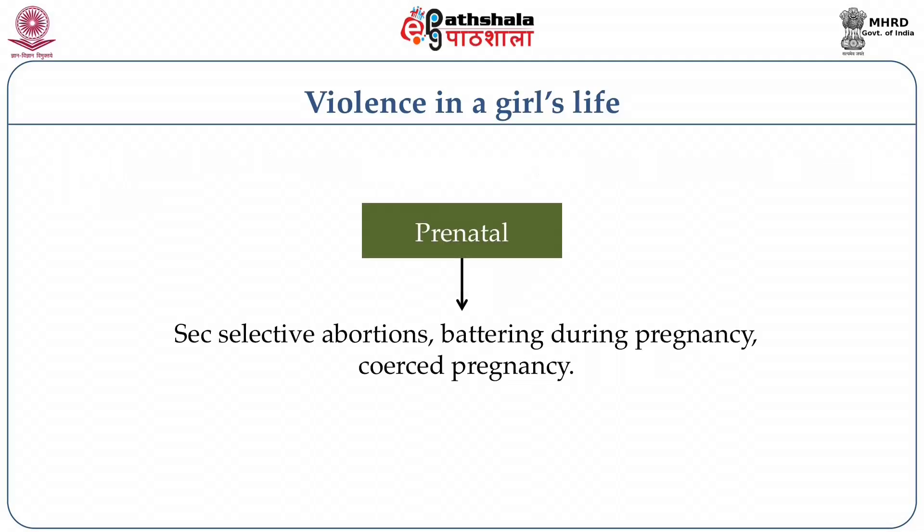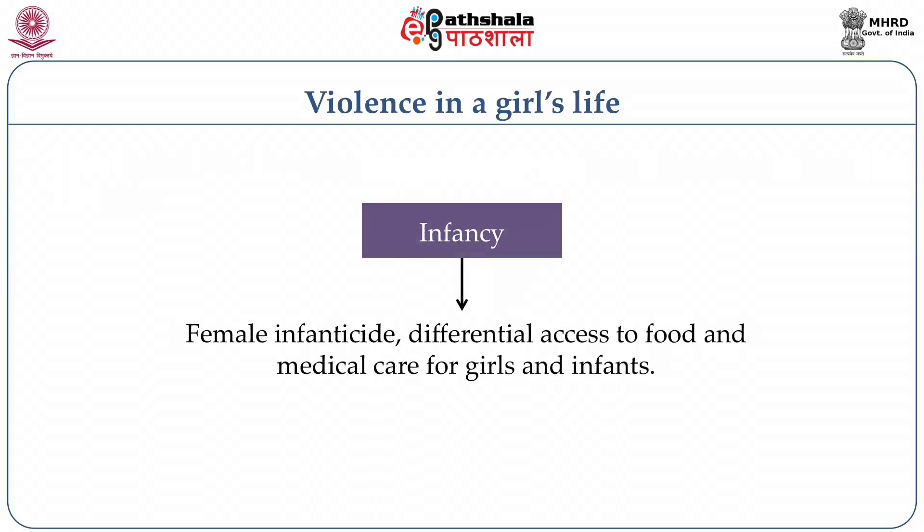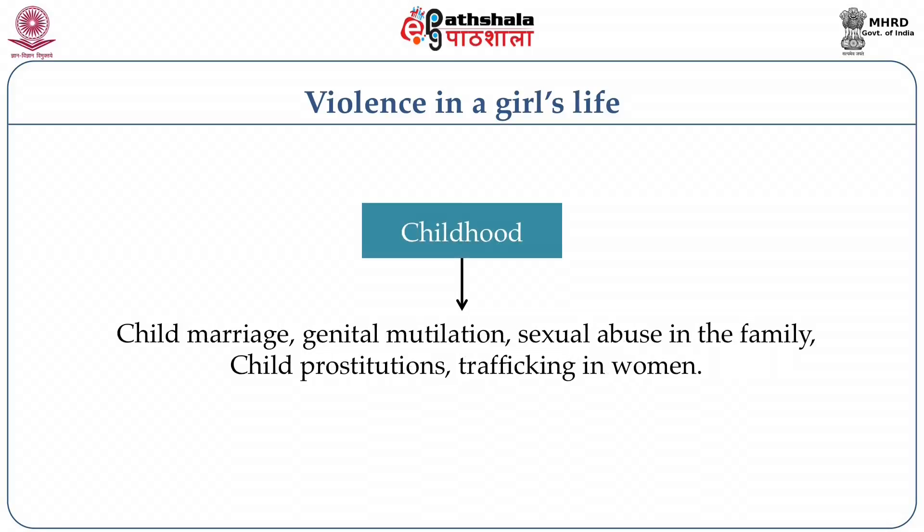At the prenatal stage, there is sex-selective abortion, battering during pregnancy, and coerced pregnancy. At infancy, there is female infanticide. Girls have different access to food and medical care. During childhood, there are child marriages, sexual abuse in the family, child prostitution, and trafficking.